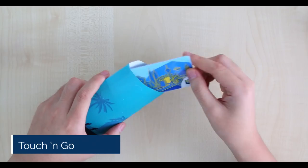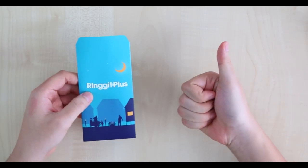Touch and Go cards are good for kids who like to Raya in different houses. They can take the LRT to go back to their own house.